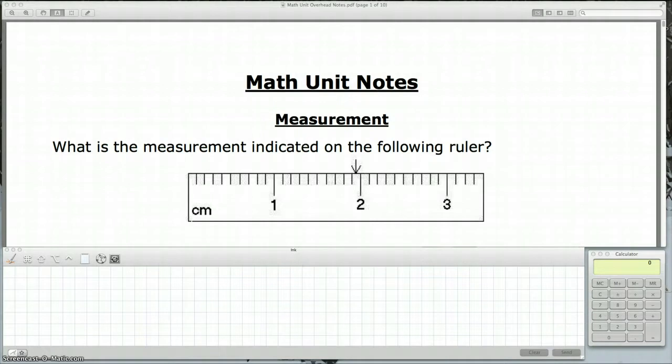What is the measurement indicated on the following ruler? If I look at this ruler, I have my one centimeter mark, my two centimeter mark, my three centimeter mark. Between there, I have tenths. So this is 1.1 centimeters, this is 1.2, 1.3, 1.4, 1.5, 1.6, 1.7, 1.8, 1.9, and then 2.0.